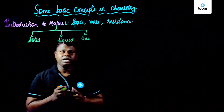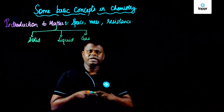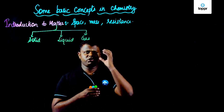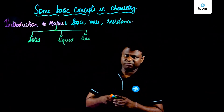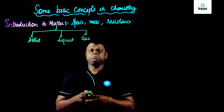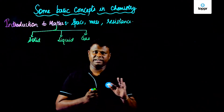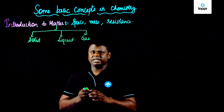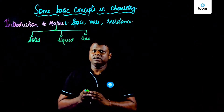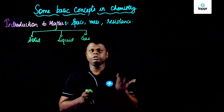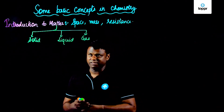Solids have definite shape and definite volume. Liquids don't have definite shape — they take the shape of the container in which they are placed — but they do have definite volume. For gases, it's completely different. Gas molecules are spread here and there. If they are placed in a cylinder, they would occupy the cylinder, but they don't have a definite shape, and volume could be calculated indirectly by different measurements.